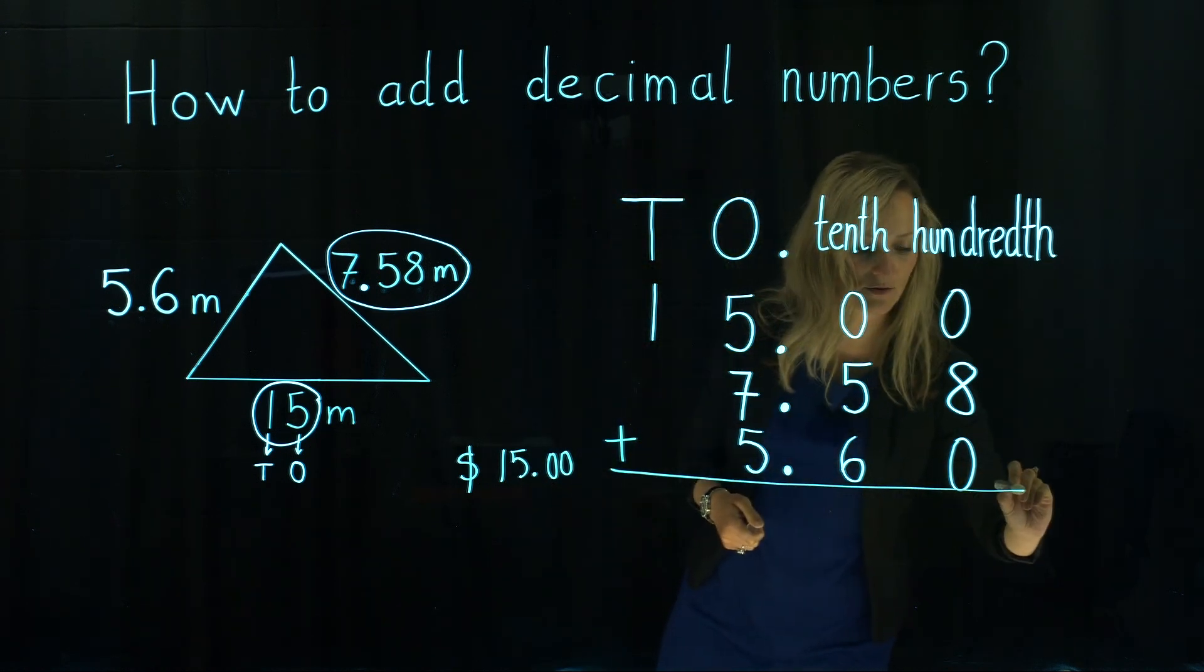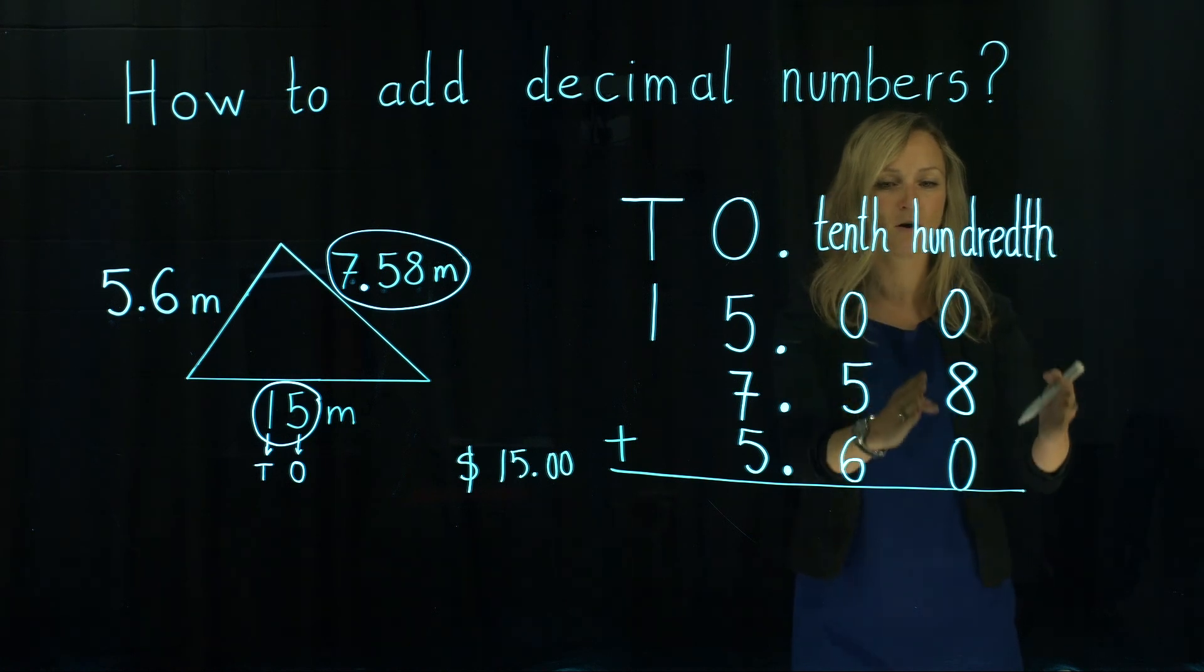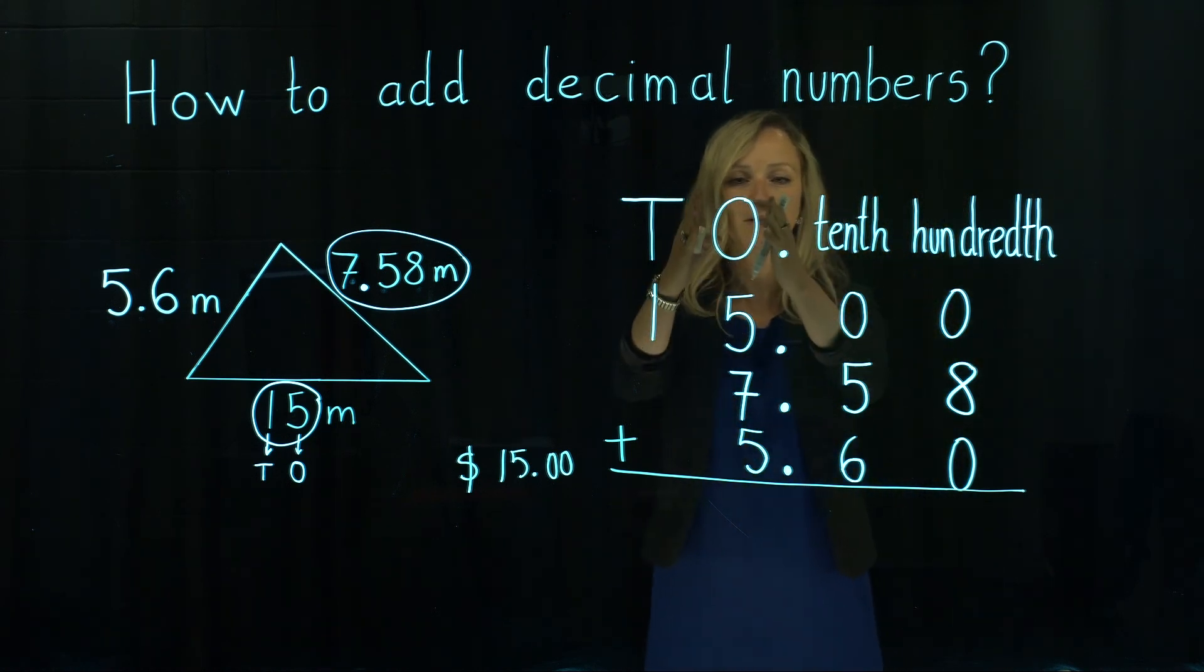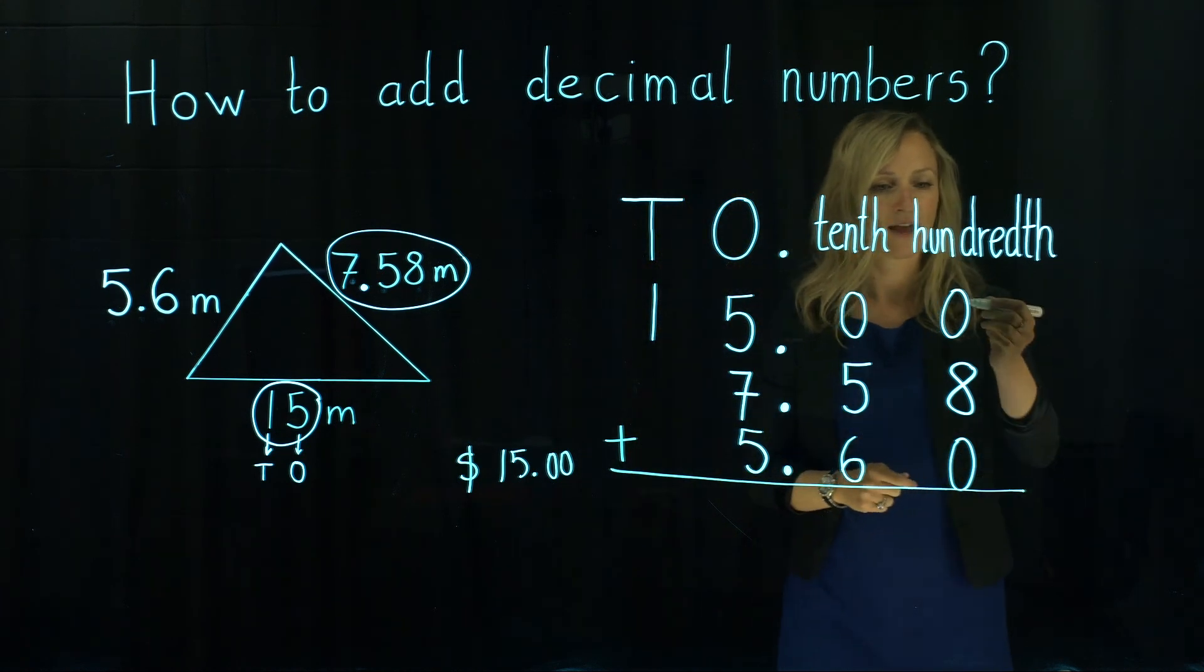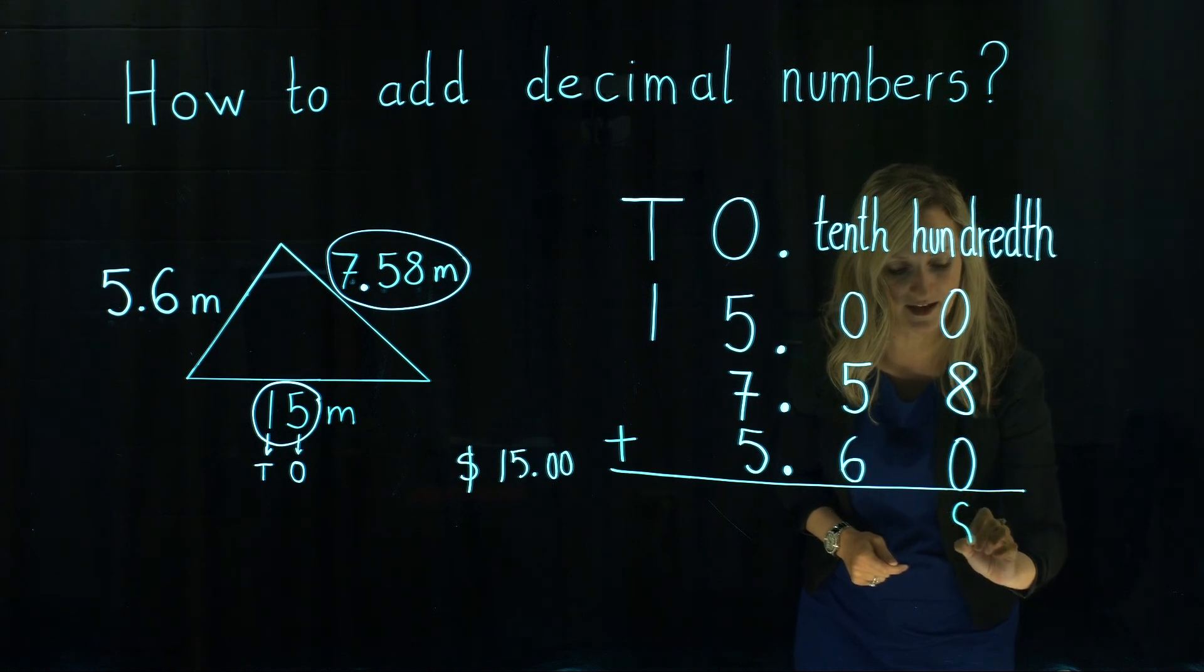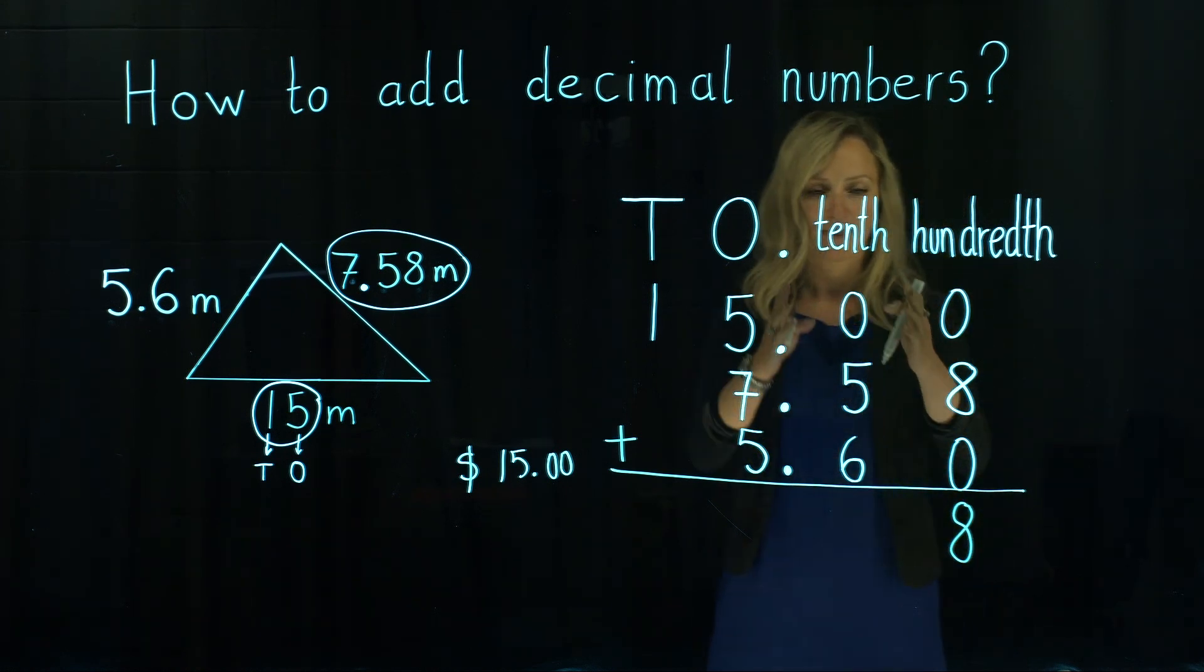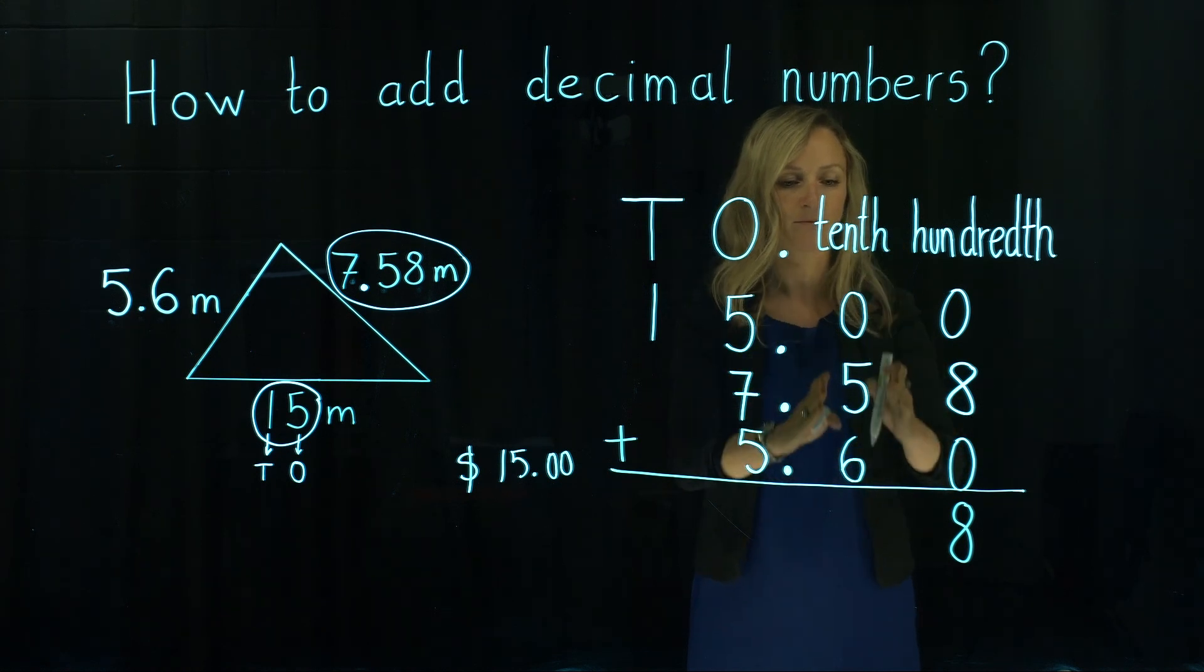Let's add all those three numbers together and we go from the smallest place value, add the column by a column. 0 plus 8 plus 0 will give us 8. Then we finished with a column of hundredths. We continue with column of tenths.